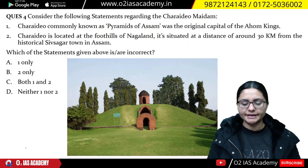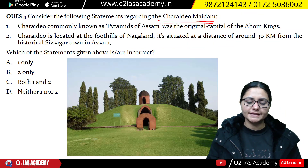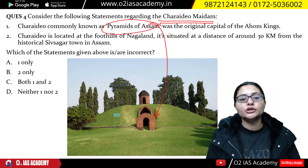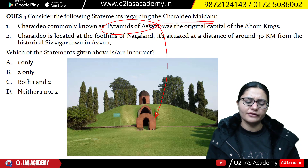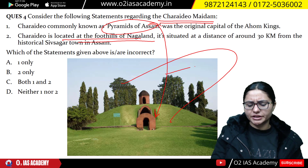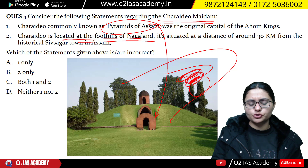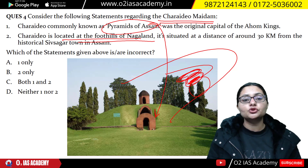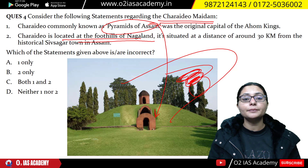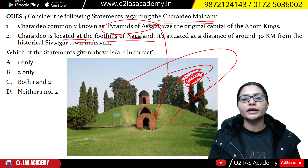The next question is related to Charaydeo Maidam — basically Assam's pyramids. These are located in Assam's north-eastern region. You will also see connections to Nagaland, Arunachal Pradesh, and the Assam region, on the foothills. Recently, the Assam government or Central Government has included Charaydeo Maidam in the UNESCO World Heritage List.